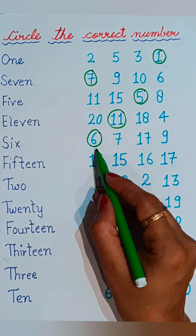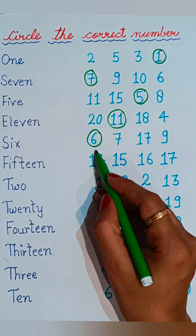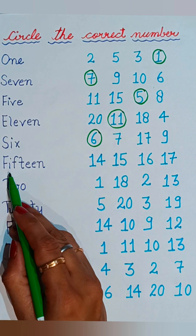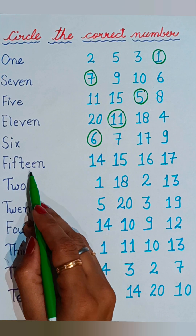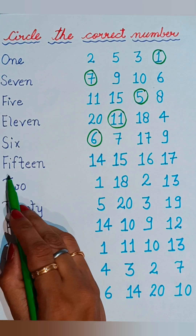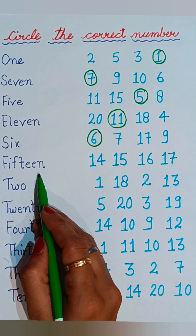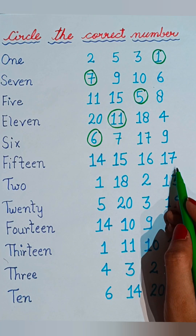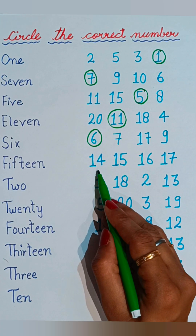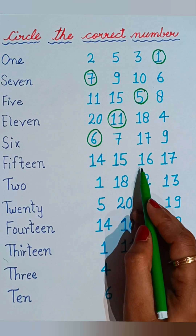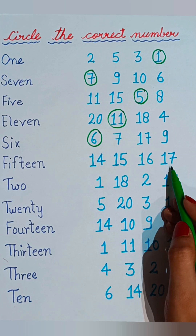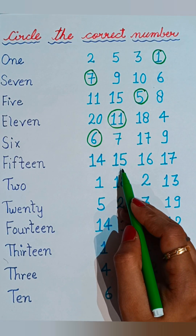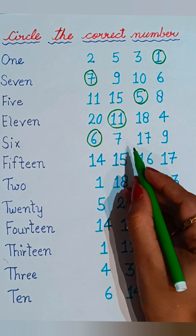Now see the next one: F-I-F-T-E-E-N, fifteen. Now tell me where fifteen is given. At the right side: fourteen, fifteen, sixteen, and seventeen. Fifteen is given on the second number, so we will circle the correct number fifteen.